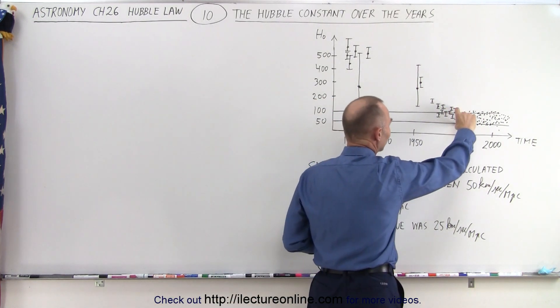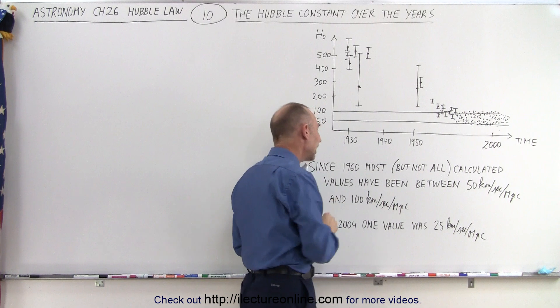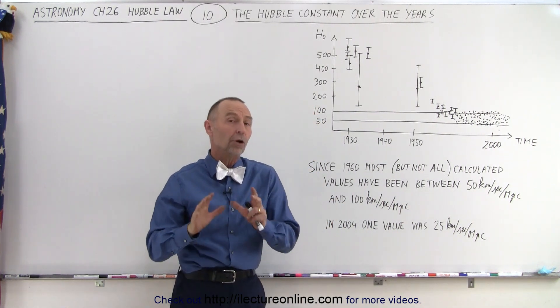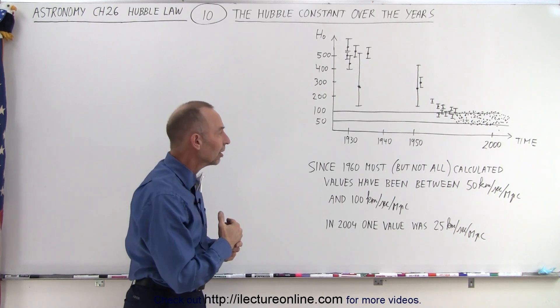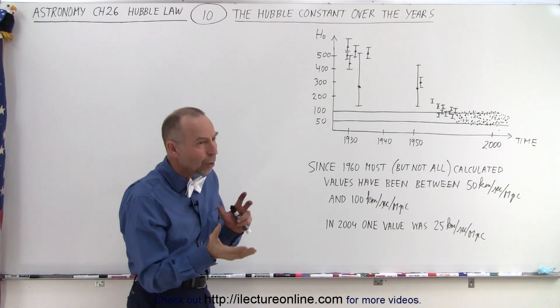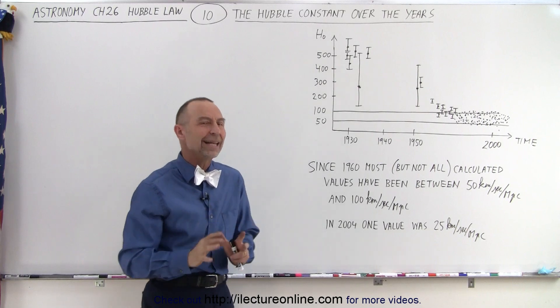Then slowly the estimates began to migrate between 50 and 100, and since 1960 most but not all the estimates for the Hubble constant have been between 50 and 100 kilometers per second per megaparsec, with most of them between 60 and 80.